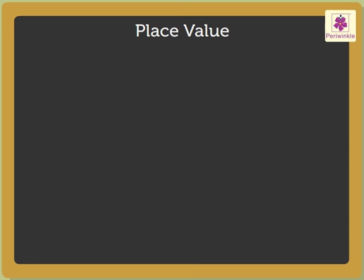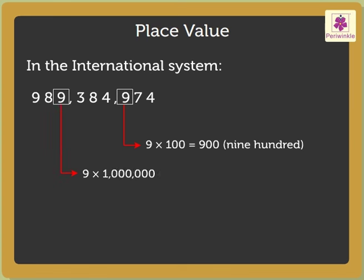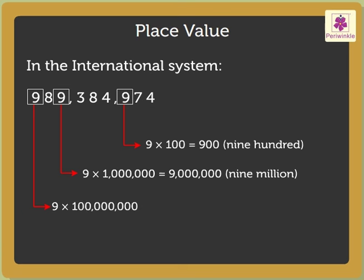Now, let us see the place values of 9 in the international system, starting from the right. 9 × 100 = 900. 9 × 1 million = 9 million. And 9 × 100 million = 900 million.